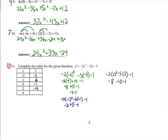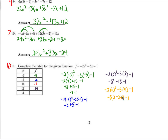And the last value for this one, x equals 4: negative 2 times 4 squared, minus 5 times 4, minus 1. 4 squared is 16, times negative 2 is negative 32. Minus 20, minus 1 — that's negative 52, negative 53.